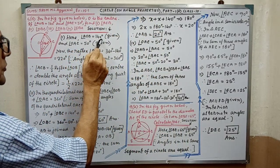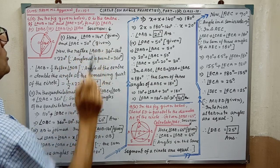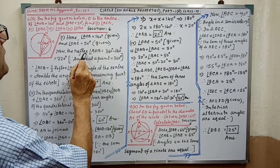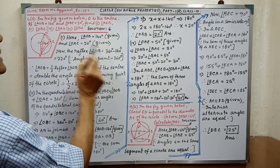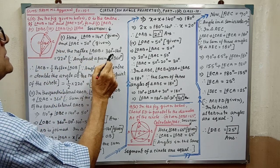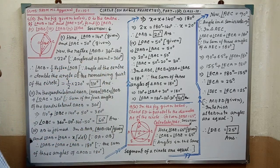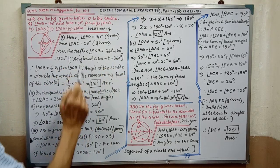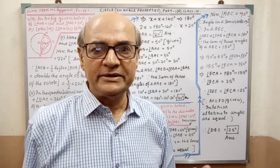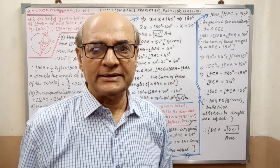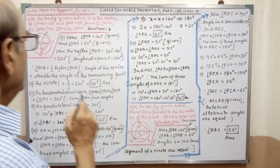Here angle AOB equal to 140 degree — that is given. Angle OAC equal to 50 — that is also given. Now the reflex angle AOB — that is 360 degree minus 140 degree equal to 220 degree, since the angles at a point equal to 360 degree. What is written within the bracket, that reason you have to write.